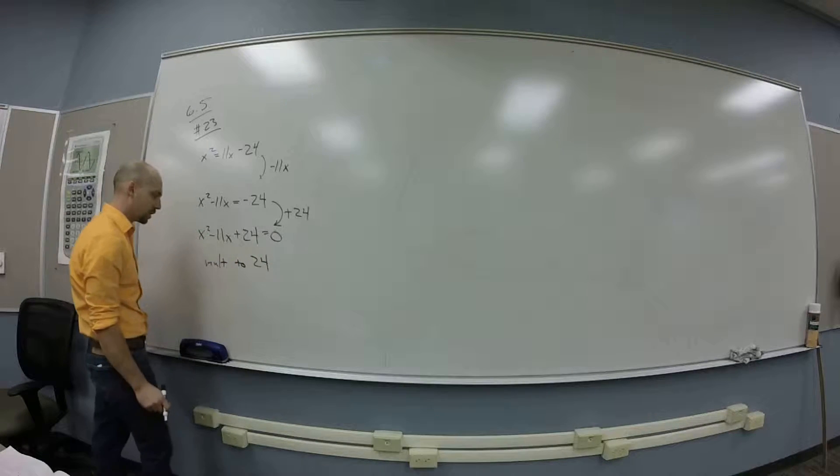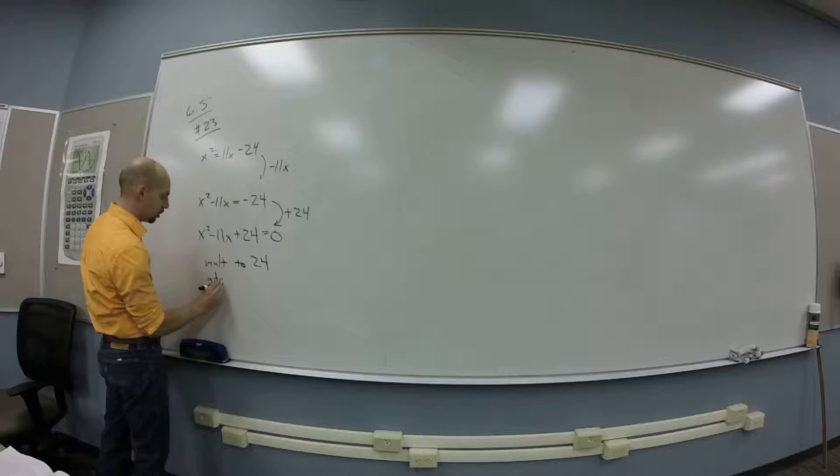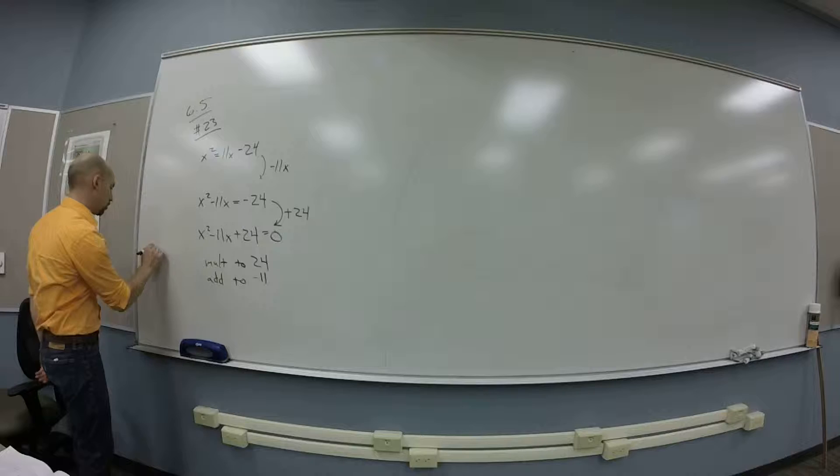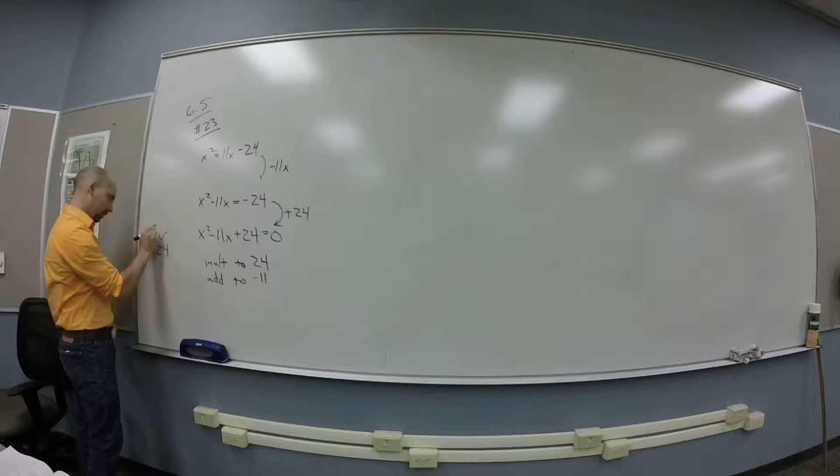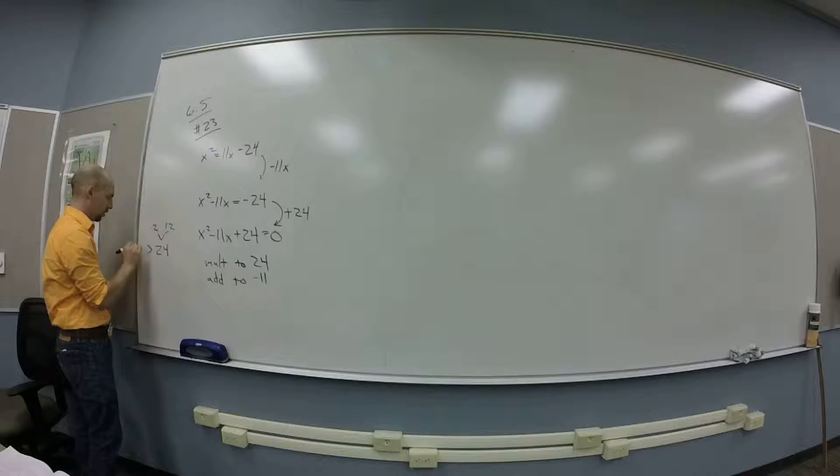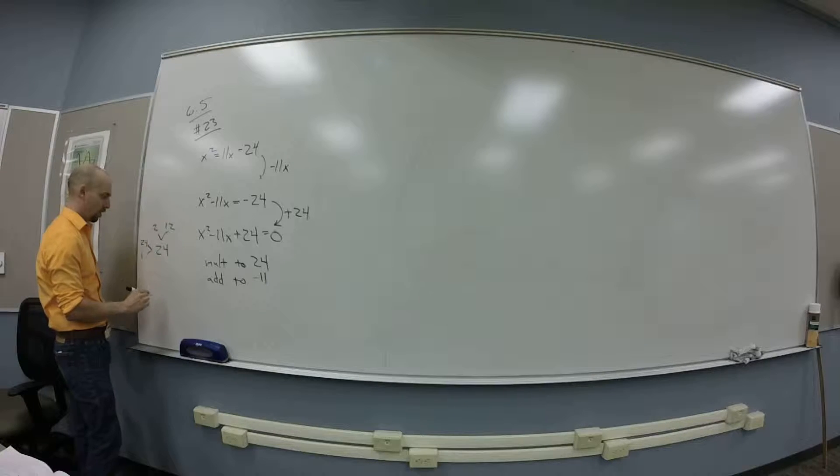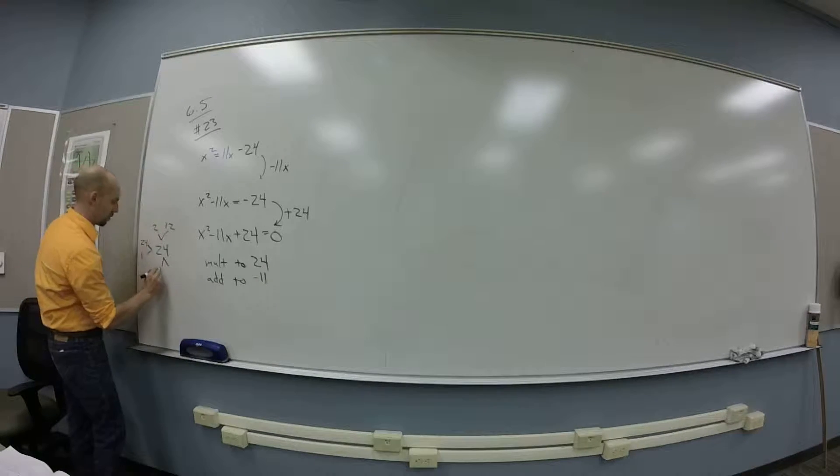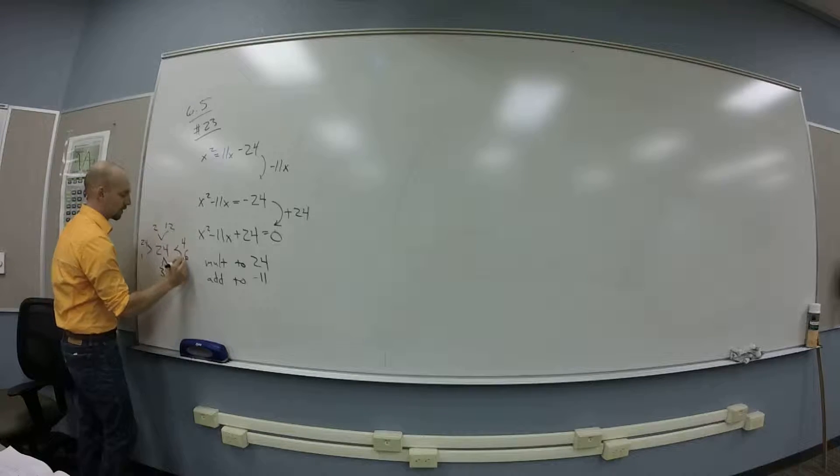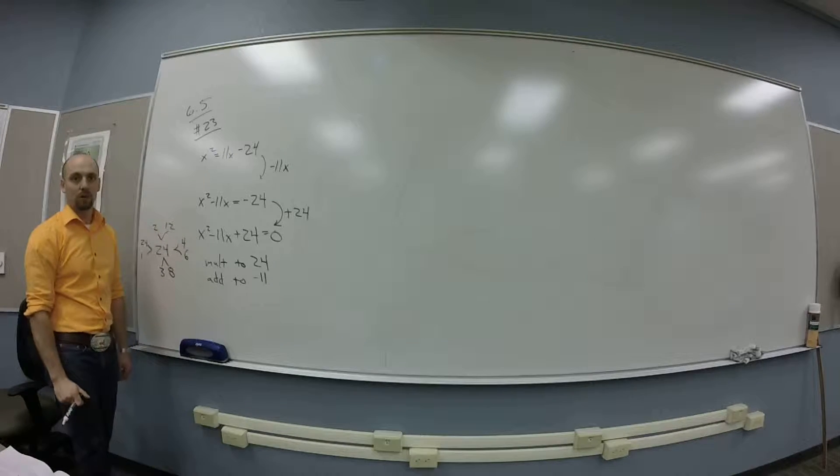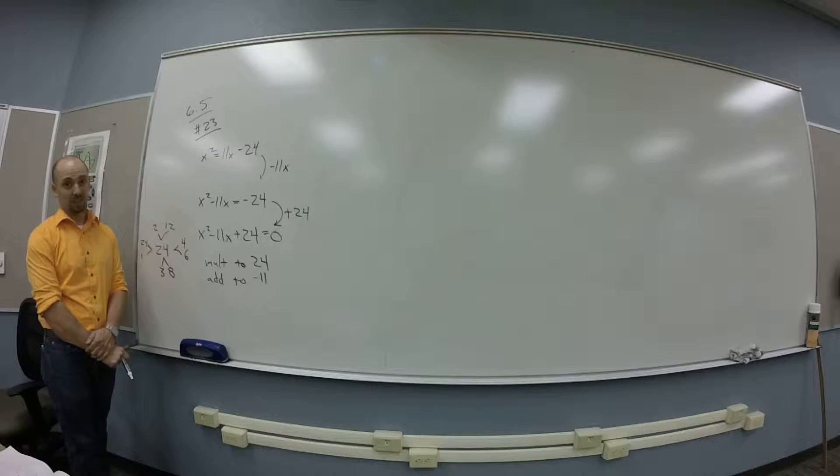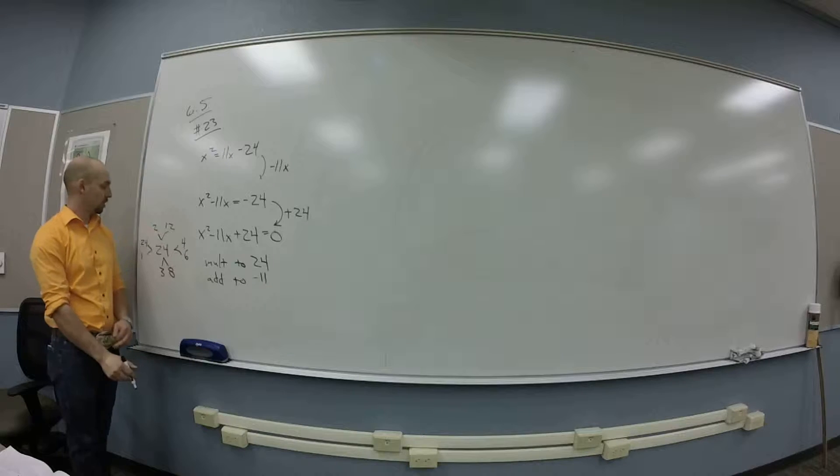Okay, so I'm looking for two numbers that multiply out of 24, add to negative 11. So 24 is 2 times 12, 1 times 24, 3 times 8 and 4 times 6 maybe. Okay, so what kind of sums can I get out of 4 and 6? You can get 10 or 2.